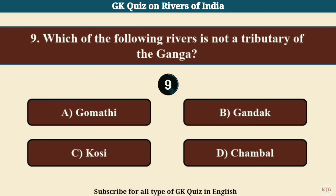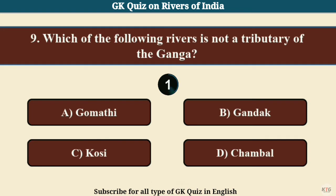Question No. 9. Which of the following rivers is not a tributary of the Ganga? Answer D: Chambal.